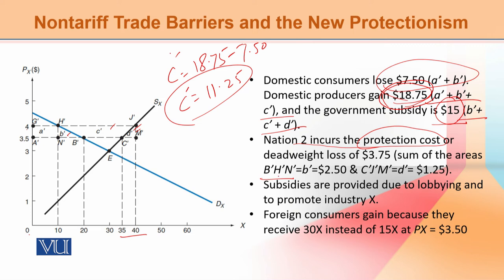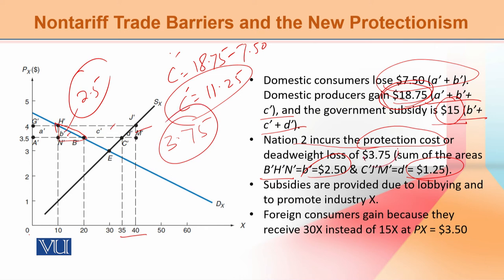دوسری protection cost: C-bar, J-bar, and M-bar — جسے آپ points B and D کہہ سکتے ہیں۔ ان دونوں کو calculate کریں اسی formula سے — B تو ہم نے پہلے calculate کیا تھا، that is 2.5۔ اسی طریقے سے C-bar, J-bar, M-bar نکالیں جو $1.25 آتا ہے۔ دونوں plus کریں تو dead weight loss یعنی protection cost = $3.75.